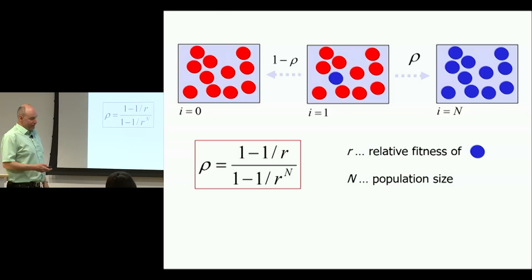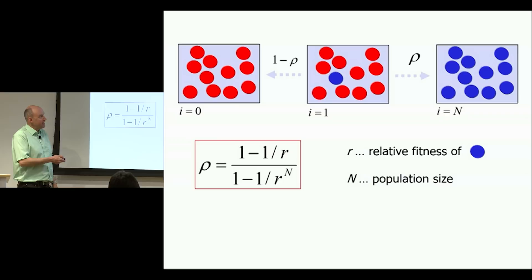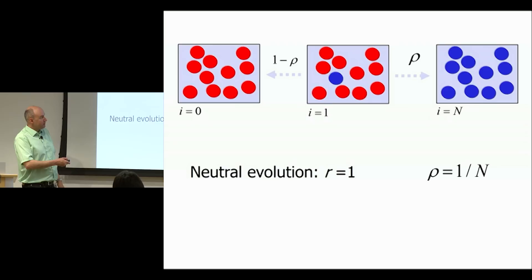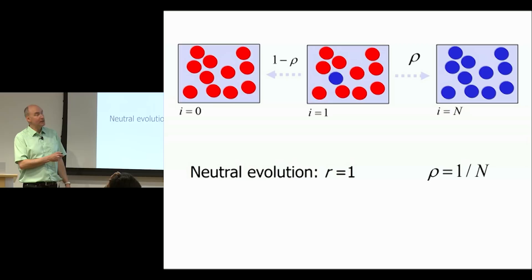With constant selection, the relative fitness of the mutant is R, compared to fitness 1 of the resident. The fixation probability can be calculated as a formula that depends on R and total population size N. In the limit where R goes to one, we have neutral evolution, and the fixation probability of a new mutant is 1/N. That's clear without calculation: if it's all neutral, every individual has the same chance of winning, so it must be 1/N. Away from neutral evolution, we have the general formula.